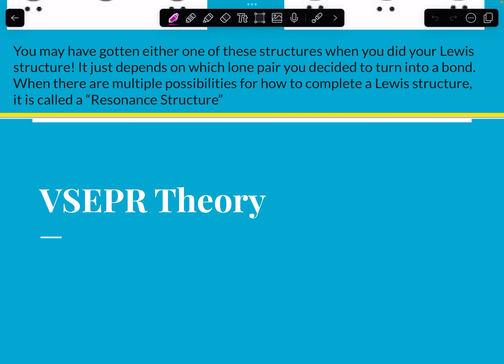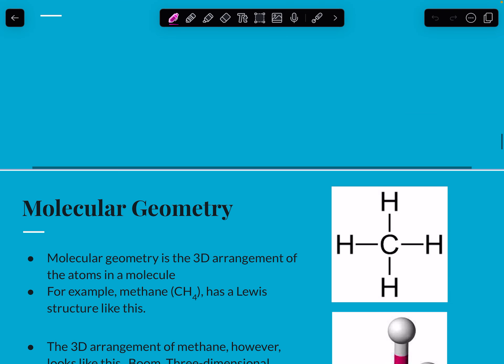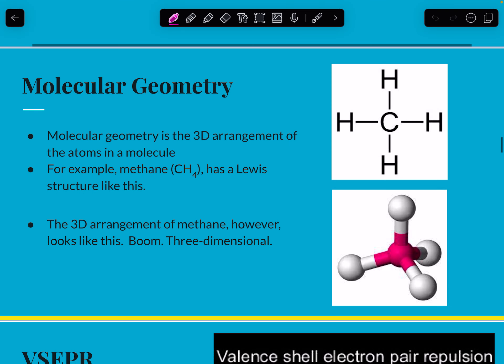All right, welcome to day two, everybody. Today we are continuing our learning about covalent structures. This right here should look familiar. Last time we learned how to do Lewis structures like this. Today we're going to learn how to figure out what they look like in 3D.